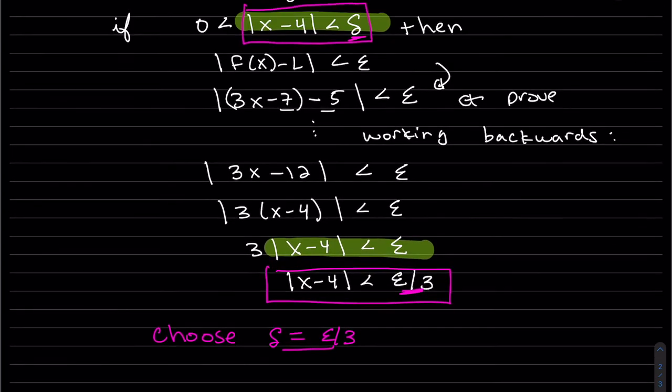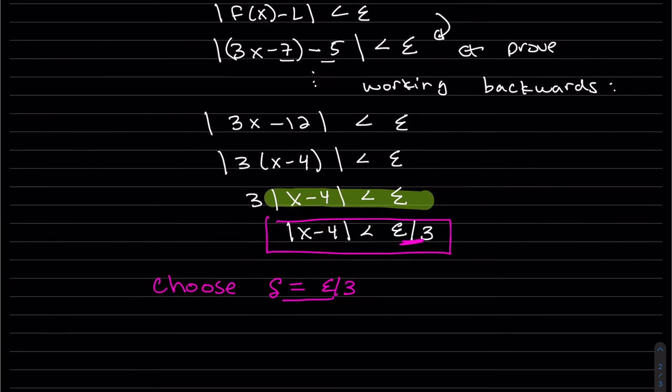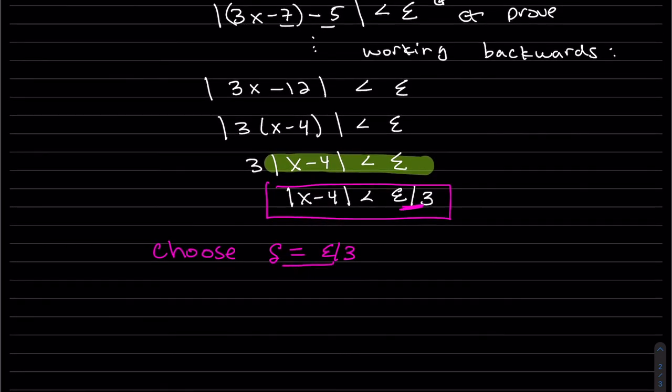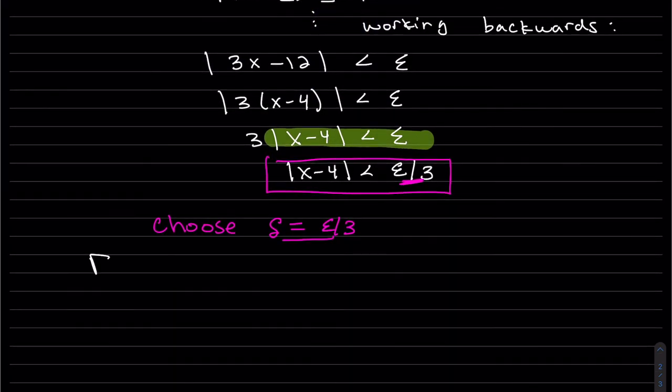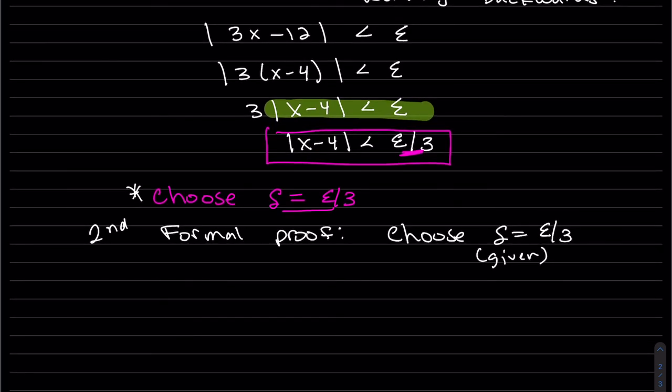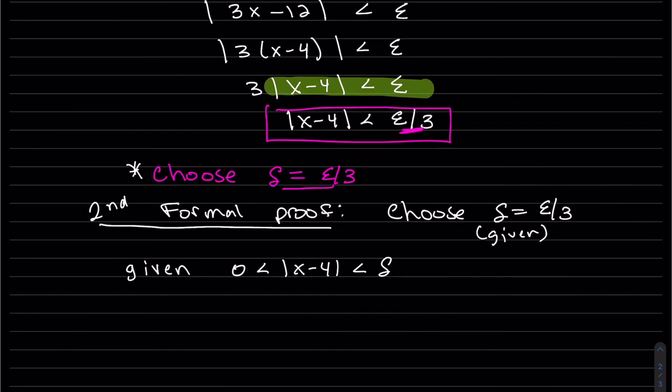Okay, so now, that was my scratch work. We didn't prove anything. We just found the delta that's going to work. So now we're going to do our formal proof. This is our second part. And our formal proof, we're going to choose δ = ε/3. Be given. We're also given this. And we can drop that zero.